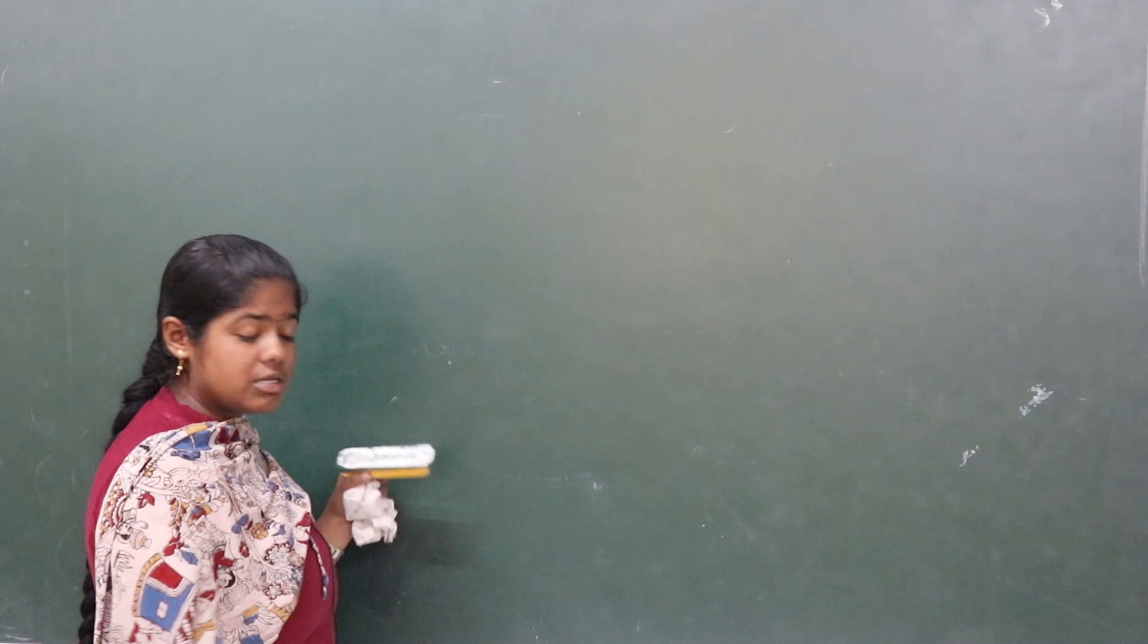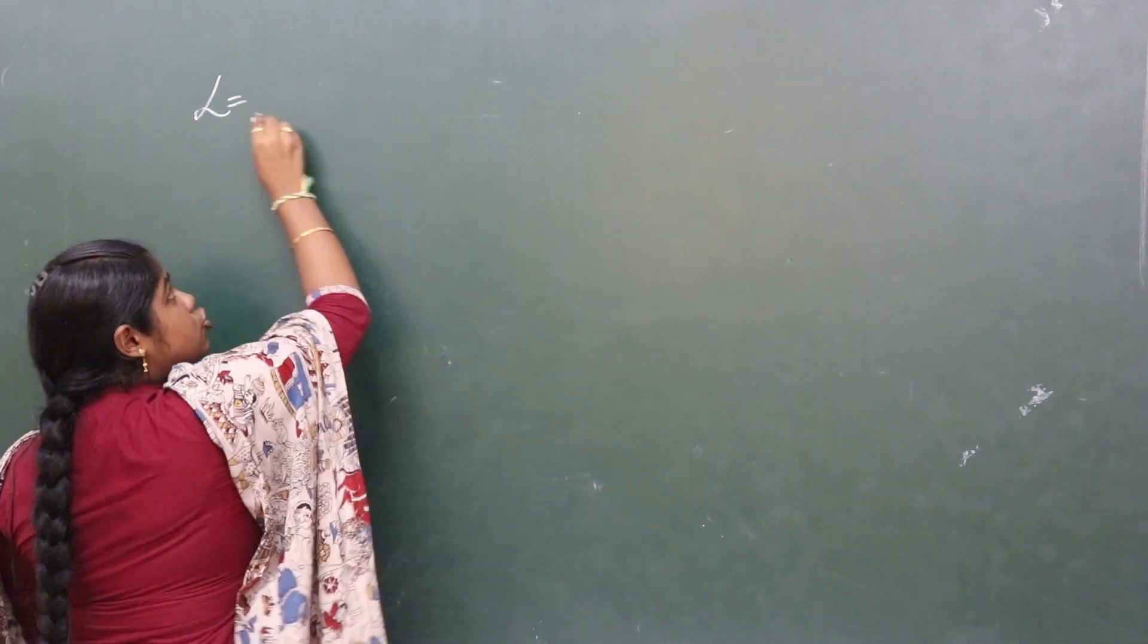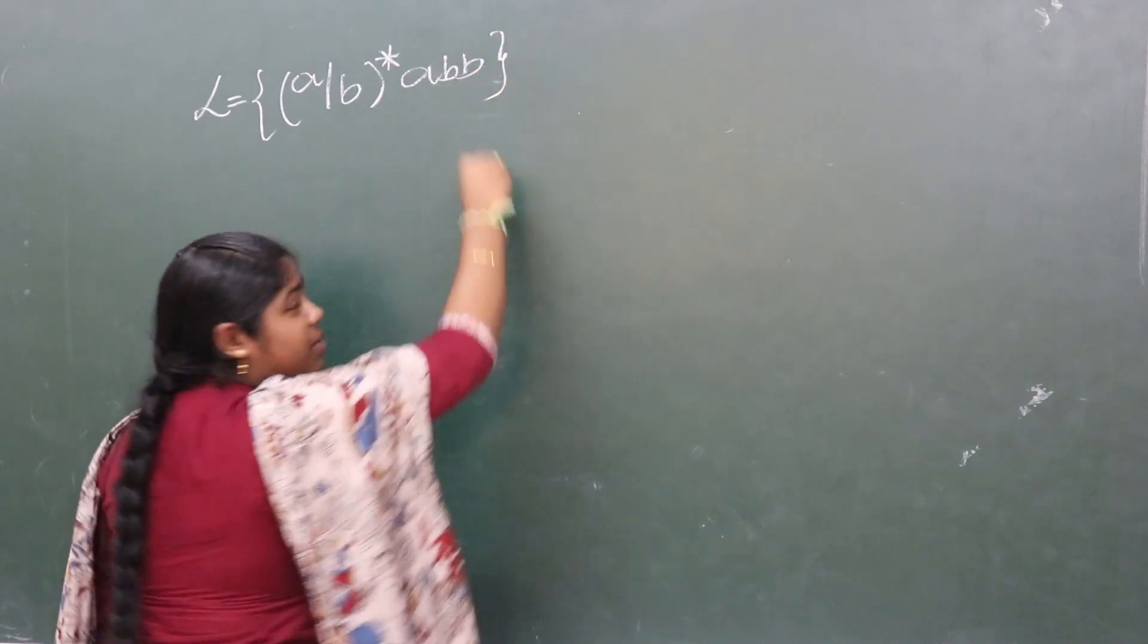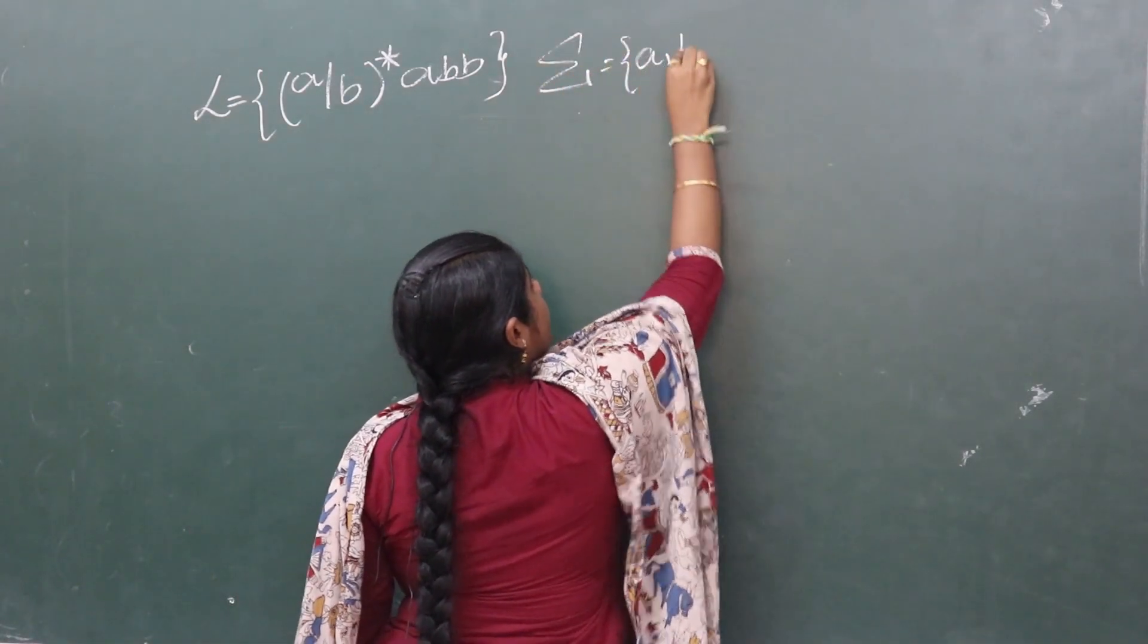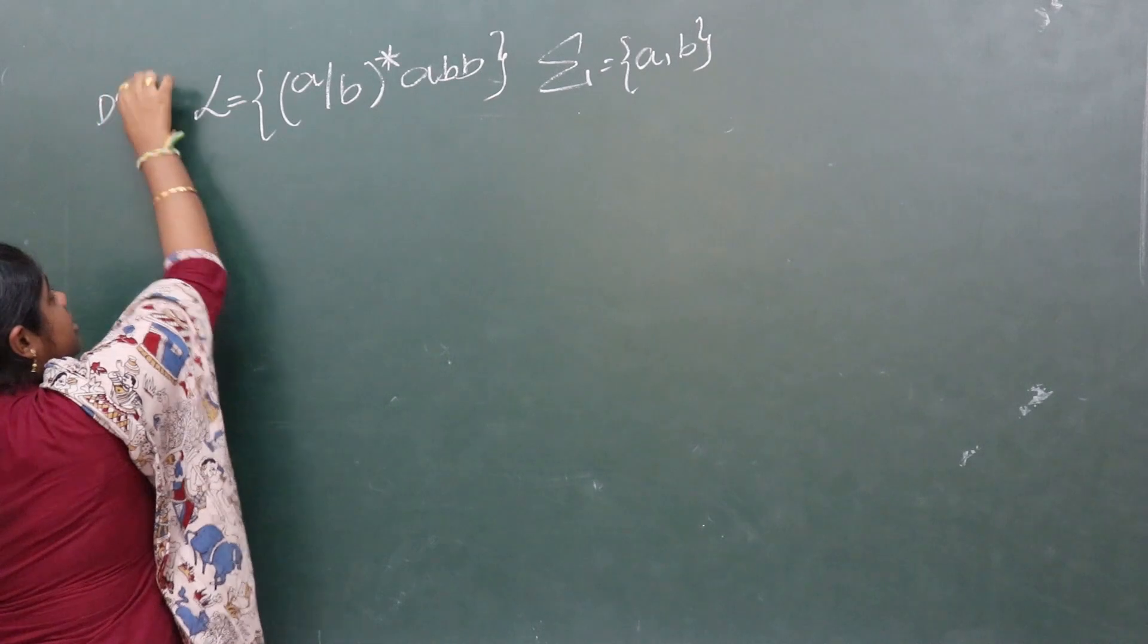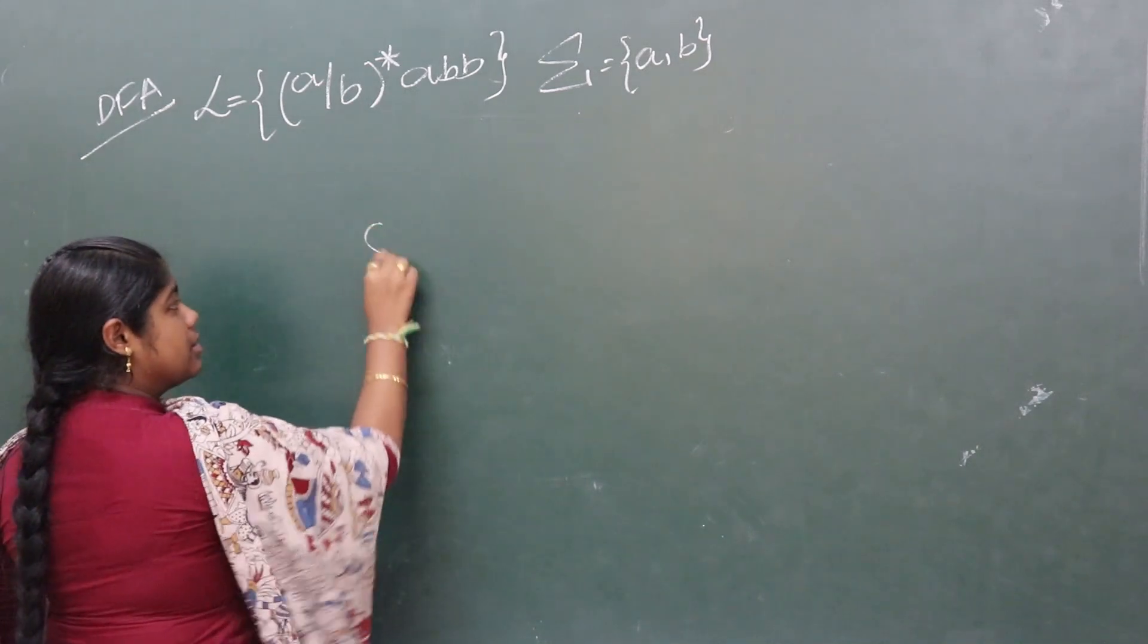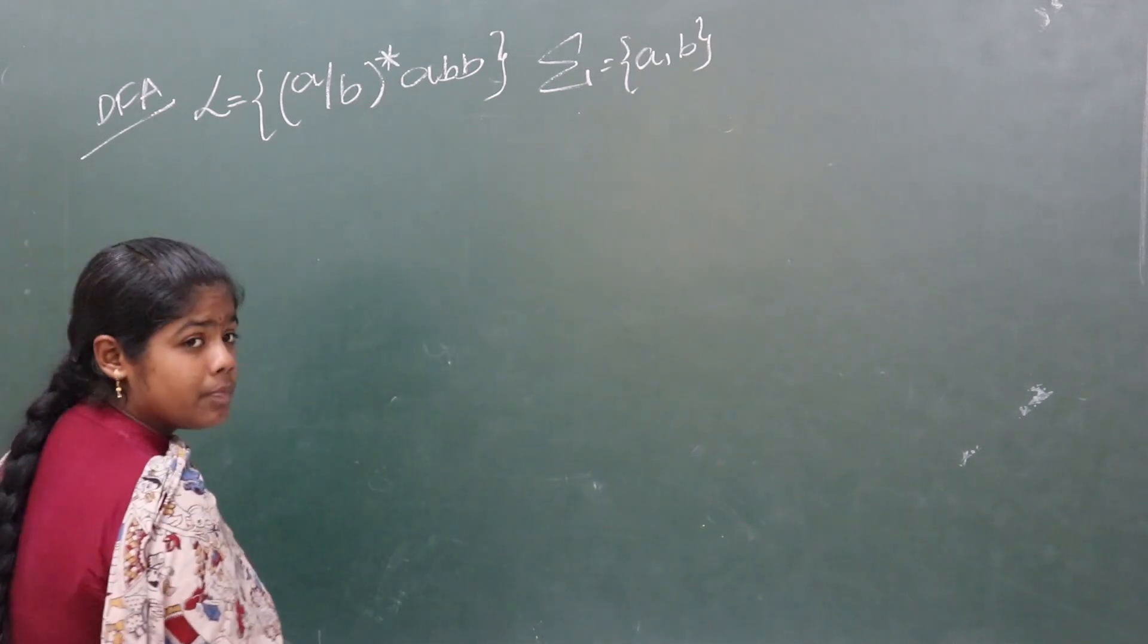Let's discuss this deterministic finite automata using an example. Consider the language to be (A+B)*ABB over input alphabet set {A, B}. We need to construct deterministic finite automata. The delta function should give a single output state for each input state and input alphabet.